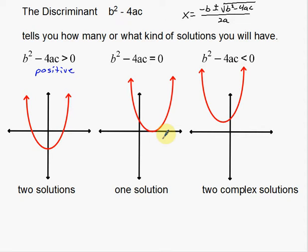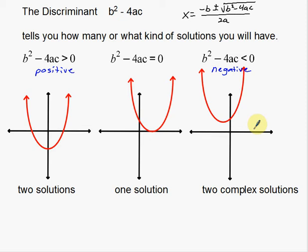The third thing that can happen is that the discriminant is negative. When you plug in your b, a, and c values into b squared minus 4ac and you get a negative number, that tells you that with a negative underneath a radical you get imaginary solutions — specifically two complex solutions. There are no points crossing the x-axis in the real numbers, but with complex numbers we do have solutions. That's what the discriminant is used for.